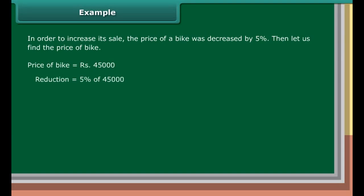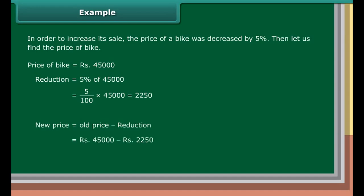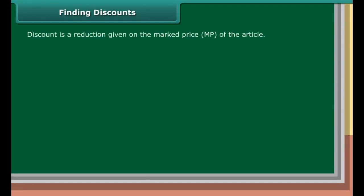In order to increase its sale, the price of a bike was decreased by 5%. Find the price of the bike now. Price of bike is rupees 45,000. Reduction equals 5% of 45,000, which is equal to 5 upon 100 into 45,000, which is equal to rupees 2,250. New price equals old price minus reduction, which is rupees 45,000 minus rupees 2,250, which is equal to rupees 42,750.